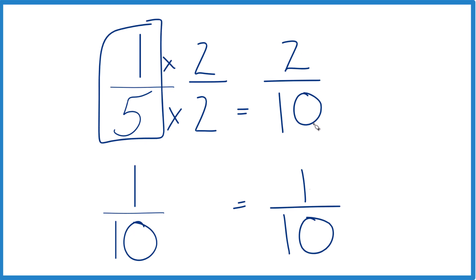And you could just subtract two minus one. So one-fifth would be one-tenth larger than one-tenth. Two minus one.